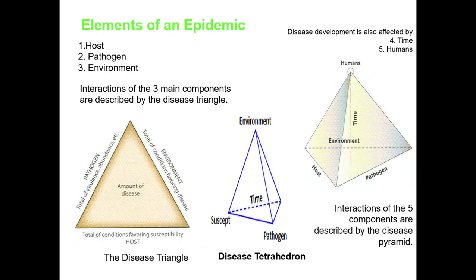How are disease epidemics developed? There are different factors involved: number one, the host must be susceptible; number two, the pathogen must be virulent; number three, the environmental factors must be favorable. Disease development is also affected by time — at which particular time the disease is going to take place, which involves the season — and by humans, specifically how humans affect the development of the disease.